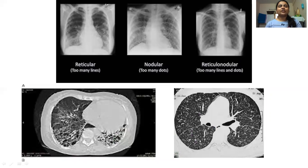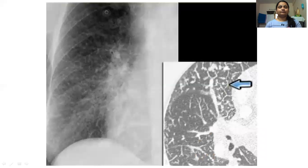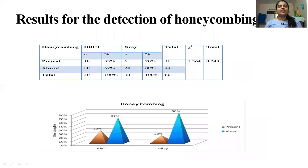These images show X-ray and HRCT of reticulonodular opacities. For septal thickening, 20% could be identified on X-ray while 50% could be identified on HRCT. For honeycombing pattern, only 20% could be identified on X-ray while 30% were identified on HRCT.